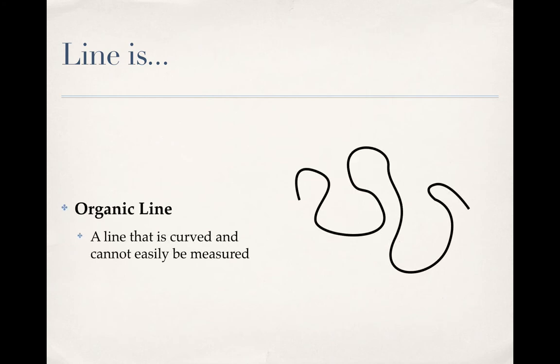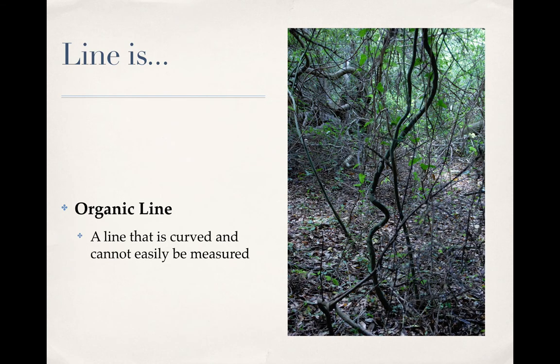The second type is organic, and these are lines that are curvy. Again, they can be three-dimensional or they can be flat. And this is an example of an organic line. So, these vines that are hanging are curvy.